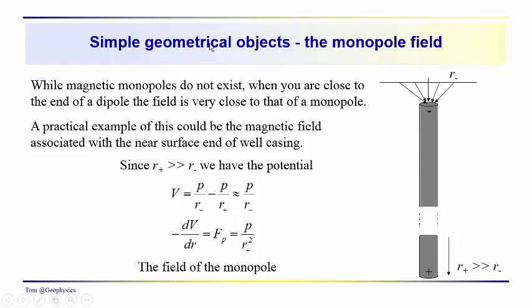Okay, well back to simple geometrical objects. Remember, we did quite a bit with simple geometrical objects when we were working with gravitational fields. We're going to start off by looking at a couple simple geometrical configurations with magnetic fields, one of which we'll start with will be the monopole field. And of course you're saying, well, there are no magnetic monopoles. What are you talking about?